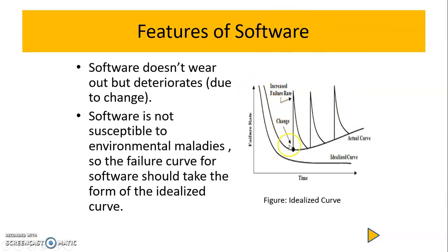In general, if we encounter errors and rectify them, the actual curve will show increased failures due to the many changes or updates we make to the software. Due to these changes, the failure rate may increase, and if we rectify those changes, the software failure rate will come back down. So the actual software failure curve appears in the form of spikes.